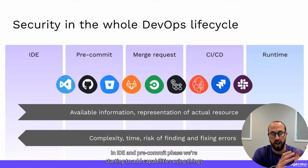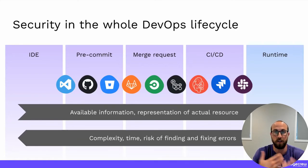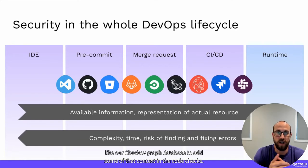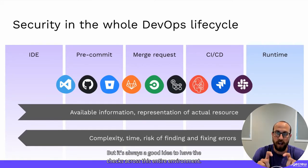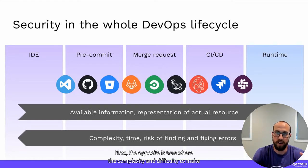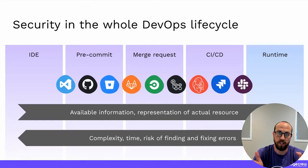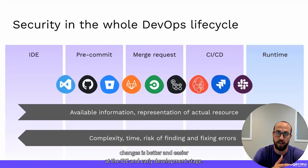In the IDE and pre-commit phase, we're starting to add capabilities using things like our Checkov graph database to add context in the code checks. It's always a good idea to have checks across this entire environment. The opposite is also true — complexity and difficulty to make changes is lower and easier at the IDE and early development stage.